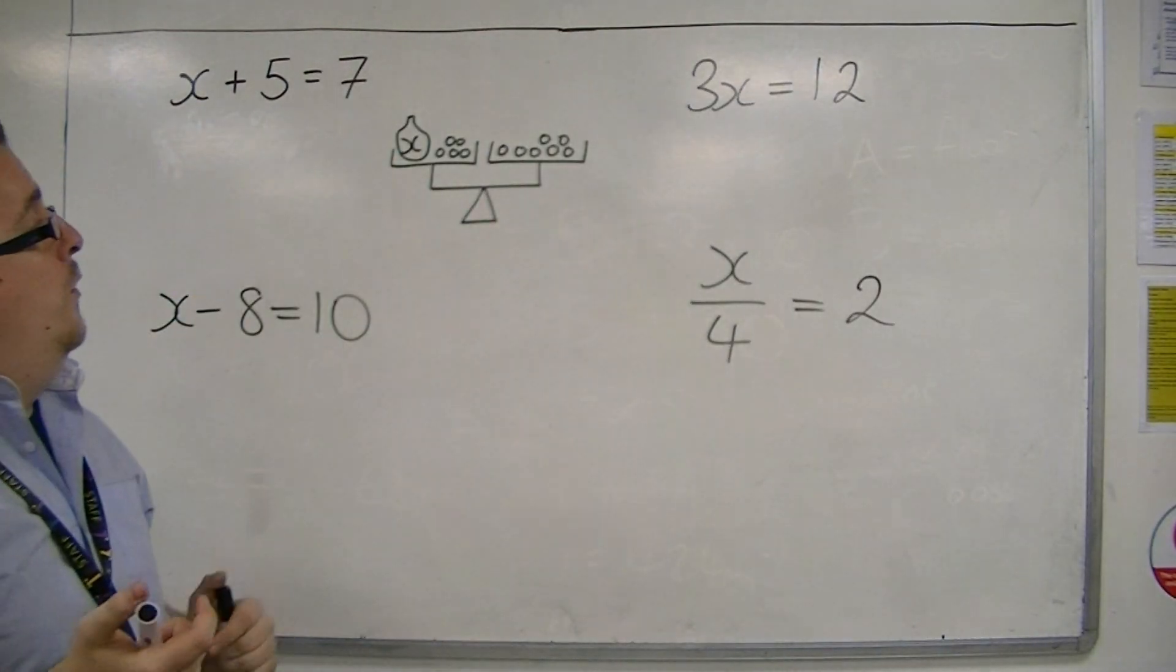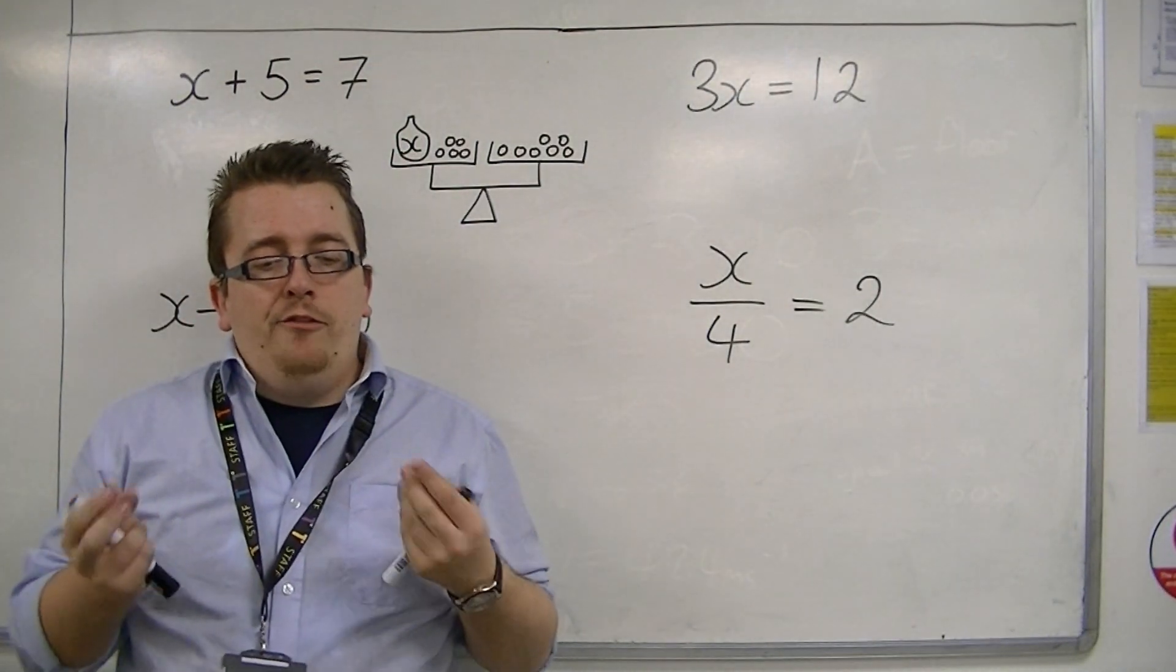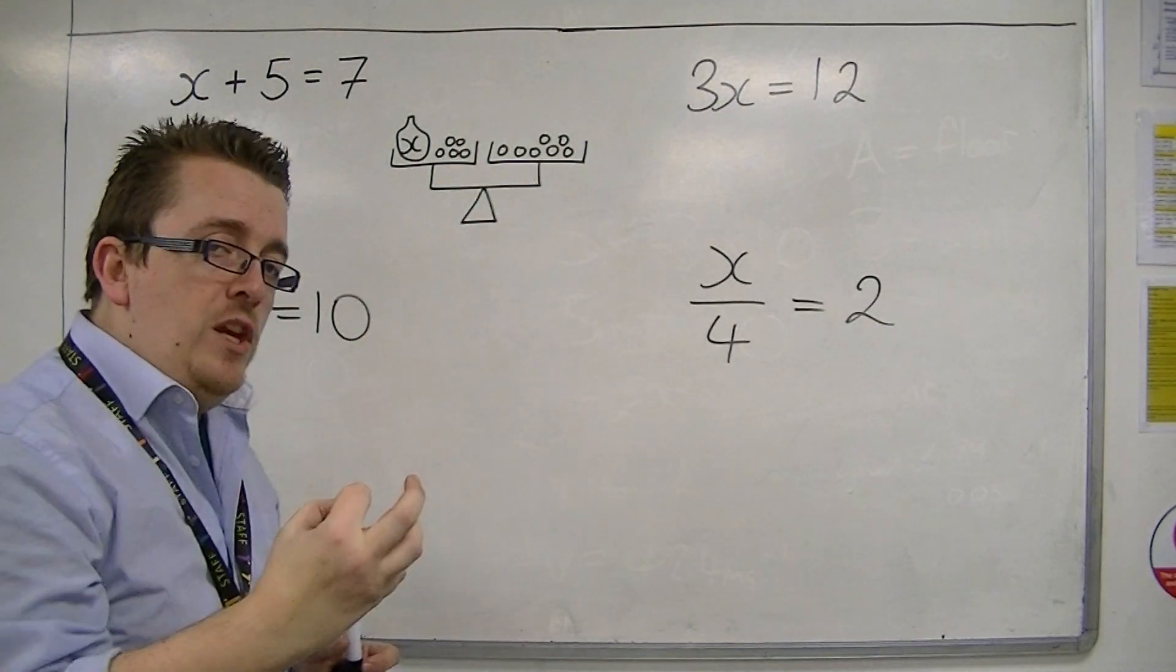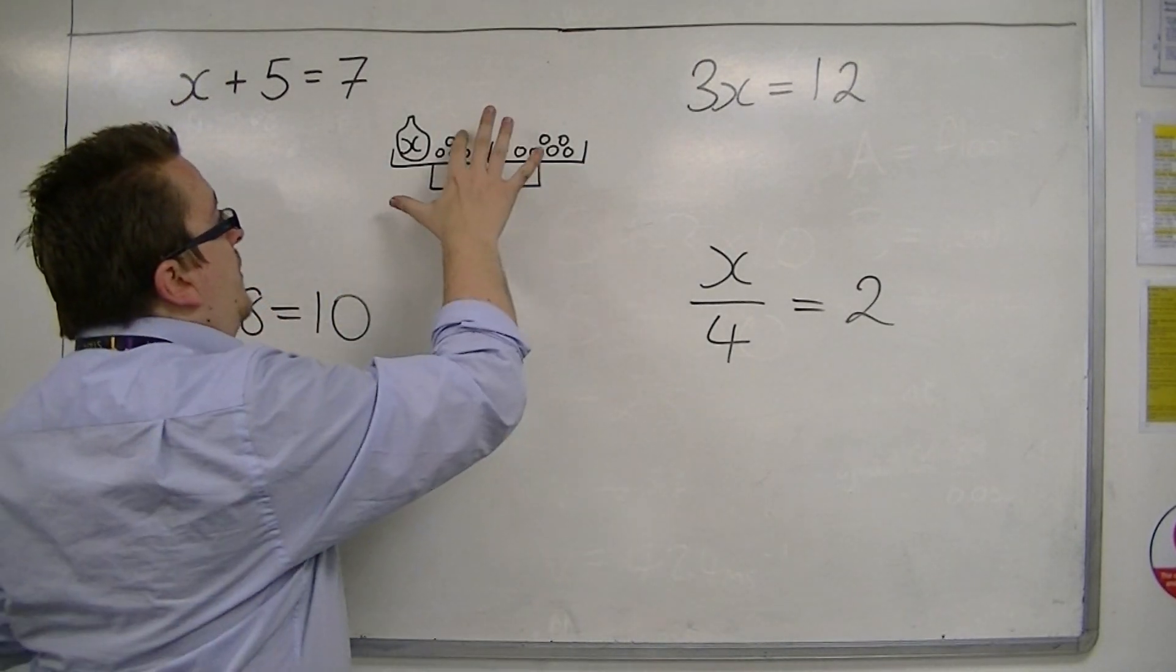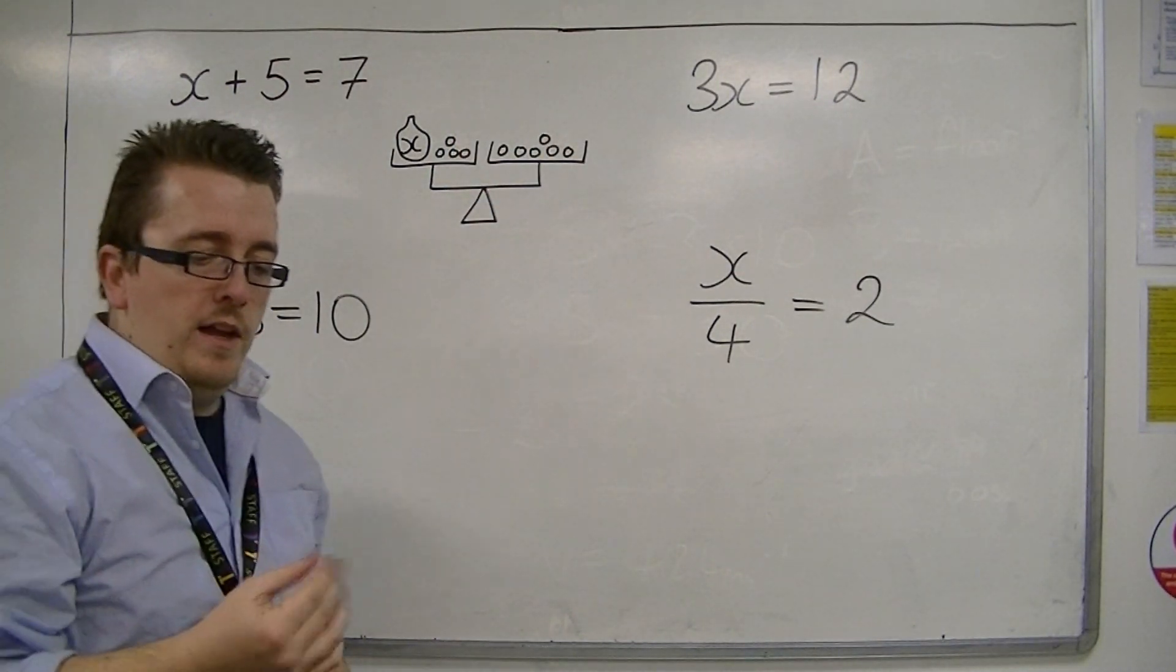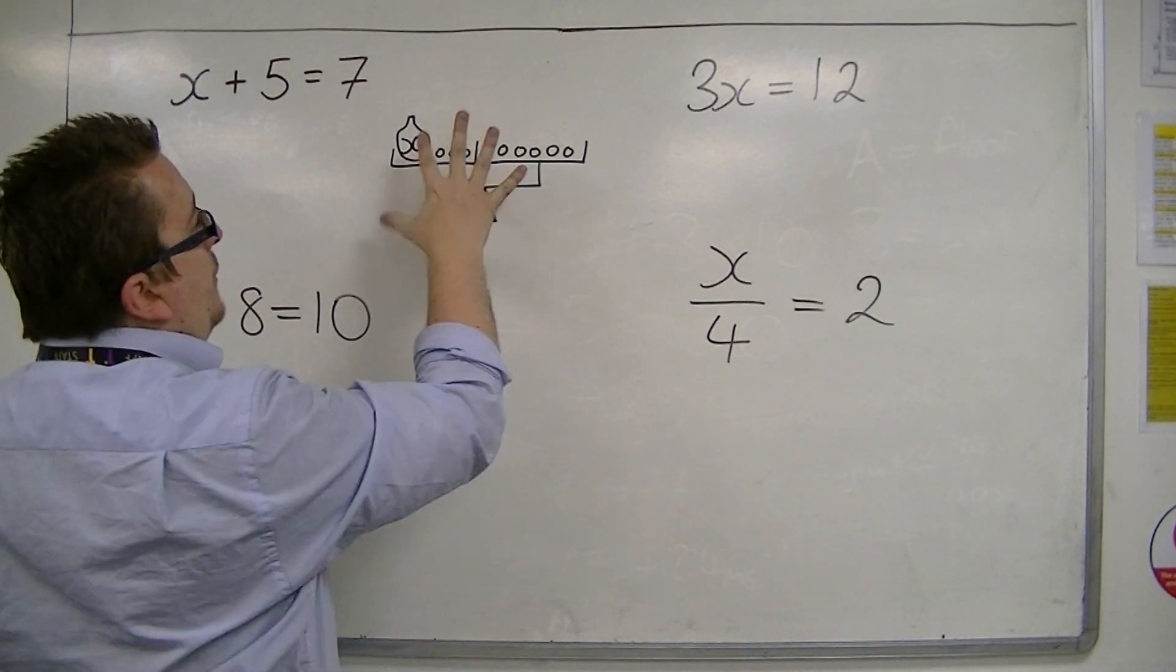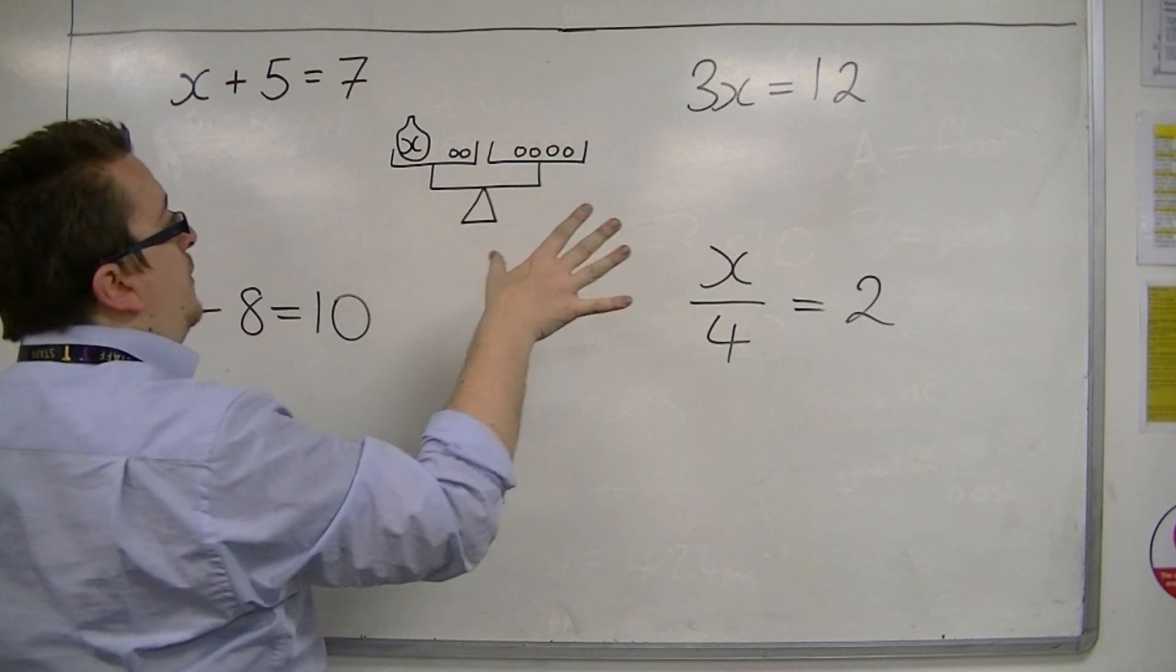Now, I need to work out what the weight of this bag is, this x. Now, if I take away one of the bits from both sides, then they are of equal weight, and so the scales still balance. So, I can take away one of the bits from both sides. Well, let's keep doing that. Let's take another one away, and another one away. So the scales still balance.